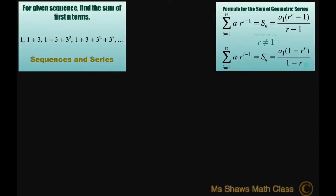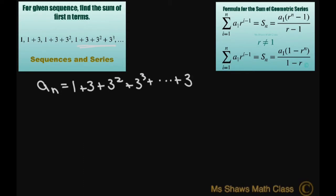Basically you just keep adding another power of 3 — the next one would be 3 to the power of 4. So your nth term is 1 plus 3 plus 3 squared plus 3 cubed plus dot dot dot, and then the last term is going to be 3 to the power of n minus 1. That's just this sequence expanded.